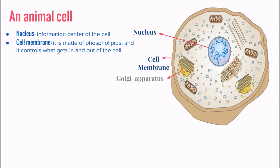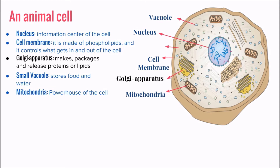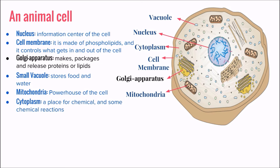Then we have the Golgi apparatus, which makes, packages, and releases proteins or lipids. Then we have the small vacuoles which store food and water. Then we have the mitochondria which makes energy using respiration. And then we have the cytoplasm, which is a place for chemicals and chemical reactions — some chemical reactions happen in the cytoplasm, like anaerobic respiration, which does not actually happen in the mitochondria.